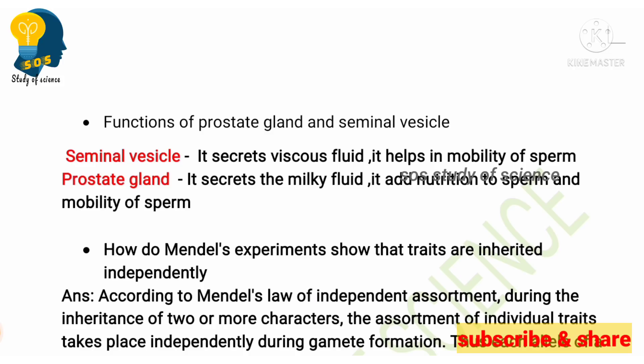The function of prostate gland and seminal vesicle may be asked. Regarding the male reproductive system — two glands: seminal vesicle and prostate gland. Seminal vesicle helps in the mobility of the sperm — it helps in the movement of the sperm. Prostate gland secretes a milky fluid, adds nutrition to the sperm, and also helps in the mobility of the sperm. A small hint: SVF — Seminal Vesicle secretes Viscous Fluid; PMF — Prostate gland secretes Milky Fluid.